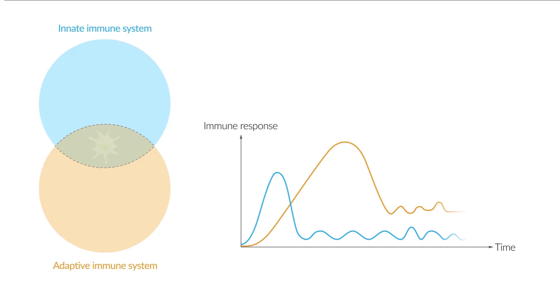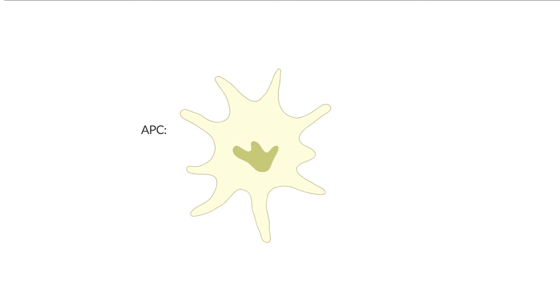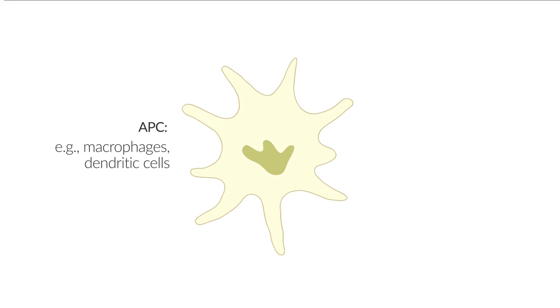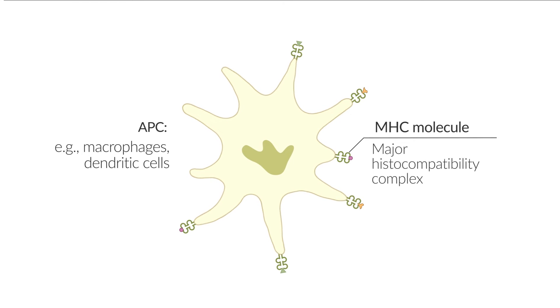Antigen-presenting cells, such as macrophages and dendritic cells, represent the intersection between the innate and adaptive immune systems. These cells take up microbial components, known as antigens, process them, and present them on the cell surface via MHC molecules, which stands for Major Histocompatibility Complex.